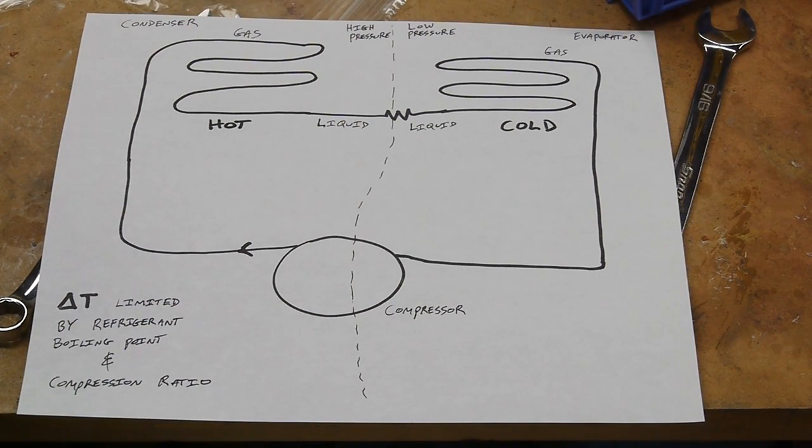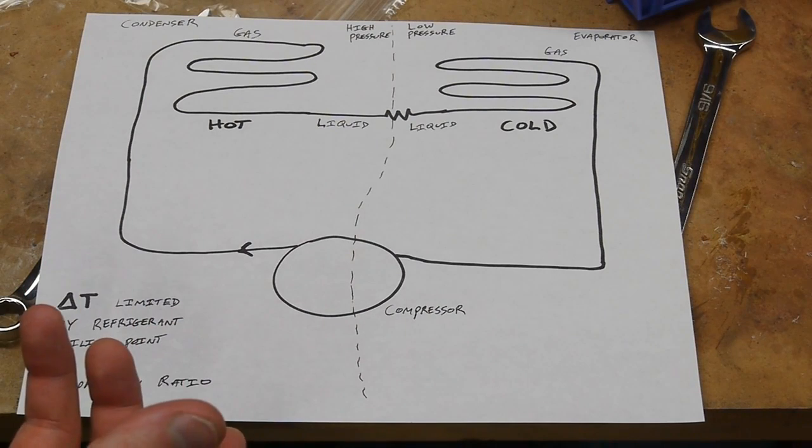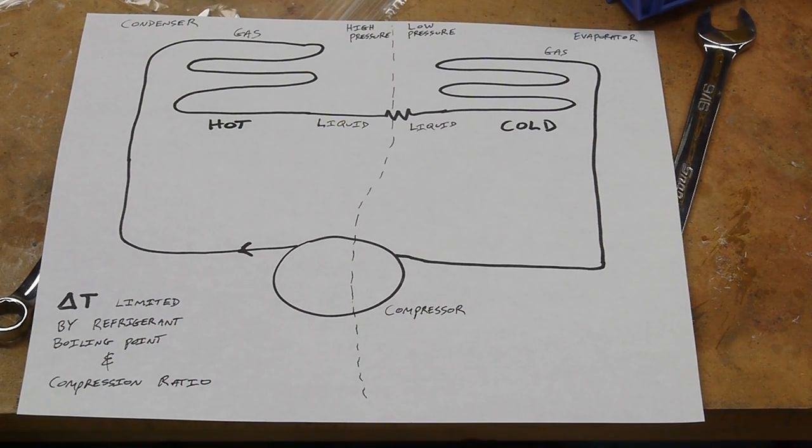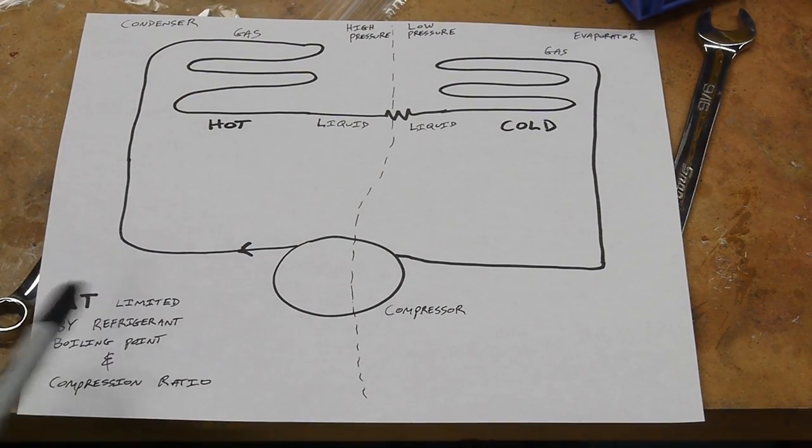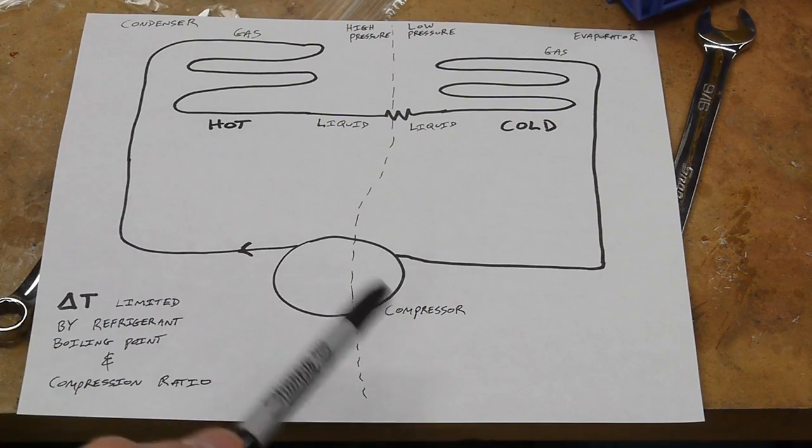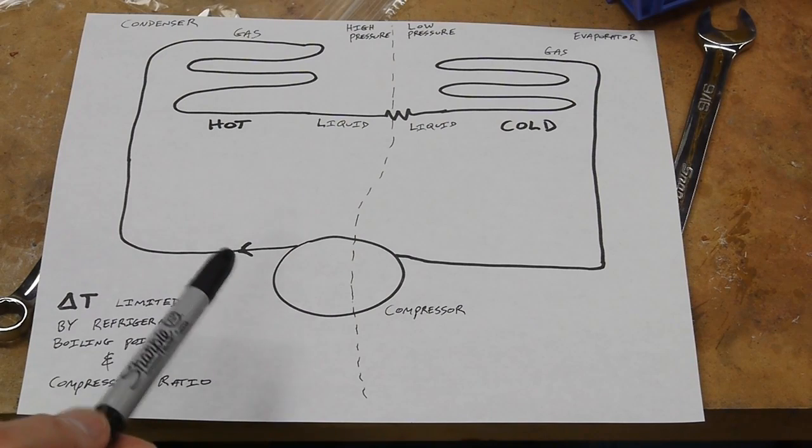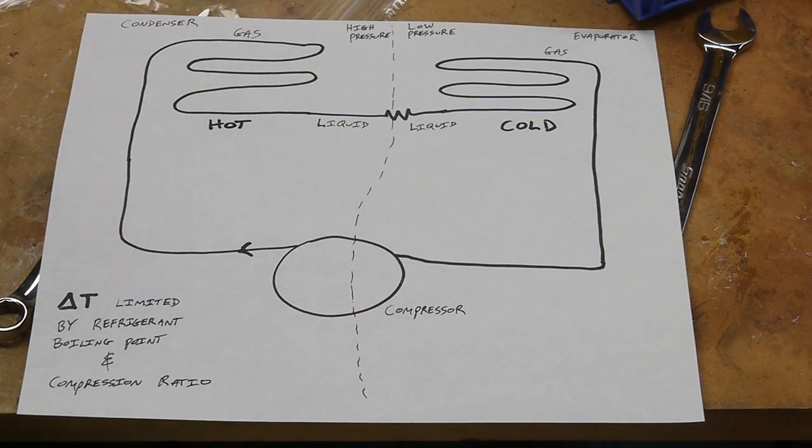So if we want a negative 100 degrees C refrigerator, it's very impractical to do it with a single refrigerant because the compression ratio would have to be enormously high. If we had a substance that boiled at negative 150 degrees C, the pressure ratio might have to be 50 or 100 to 1, and that makes other parts of the system difficult too since the copper tubing has to be thick enough to handle the really high pressure and the compressor has to be extremely over-specced.